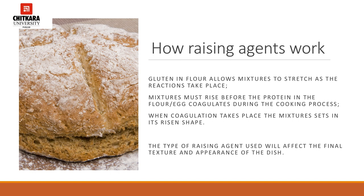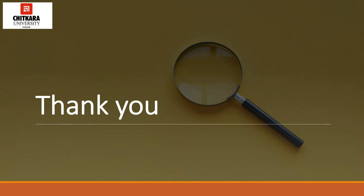Some additional information on how raising agents work: gluten in flour allows the mixture to stretch as the reaction takes place. Mixtures must rise before the protein in the flour or the egg coagulates during the cooking process. When coagulation takes place, the mixture sets in its risen shape. Most importantly, the type of raising agent used will affect the final texture and appearance of the dish. The word leavening in the baking trade is used to describe the source of gas that makes a dough or batter expand in the presence of moisture and heat. Leavening agents are available in different forms — from yeast, the organic leavener, to chemical, mechanical, and physical leaveners. Bakers choose the appropriate type of leavening based on the product they are making.